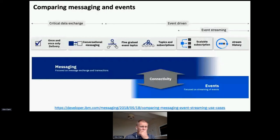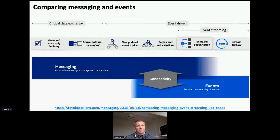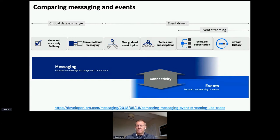From my IBM background, I think of those two left-hand use cases as fitting squarely with a messaging capability like IBM MQ. Fine-grained event topics — dynamic message hierarchies — is also unique to messaging. When we talk about coarse-grained topics, Kafka of course has topics, but they're burned into its infrastructure as partitions on brokers. That's part of how it achieves high performance, but those topics are quite coarse-grained and not particularly dynamic.